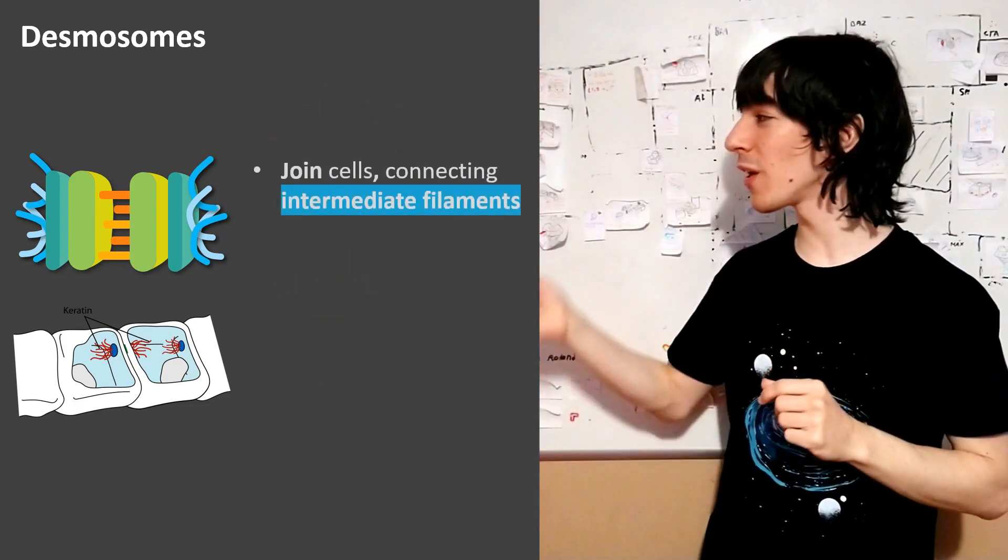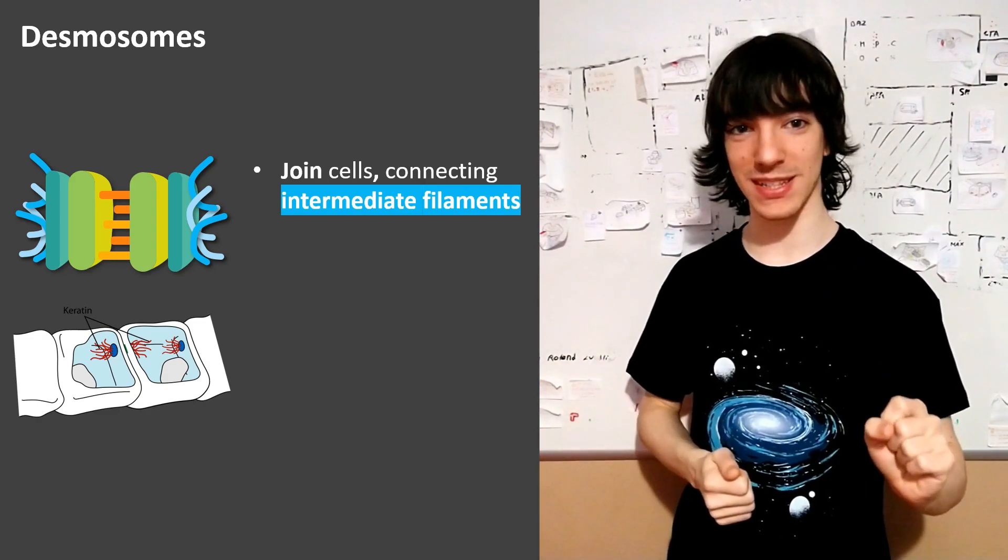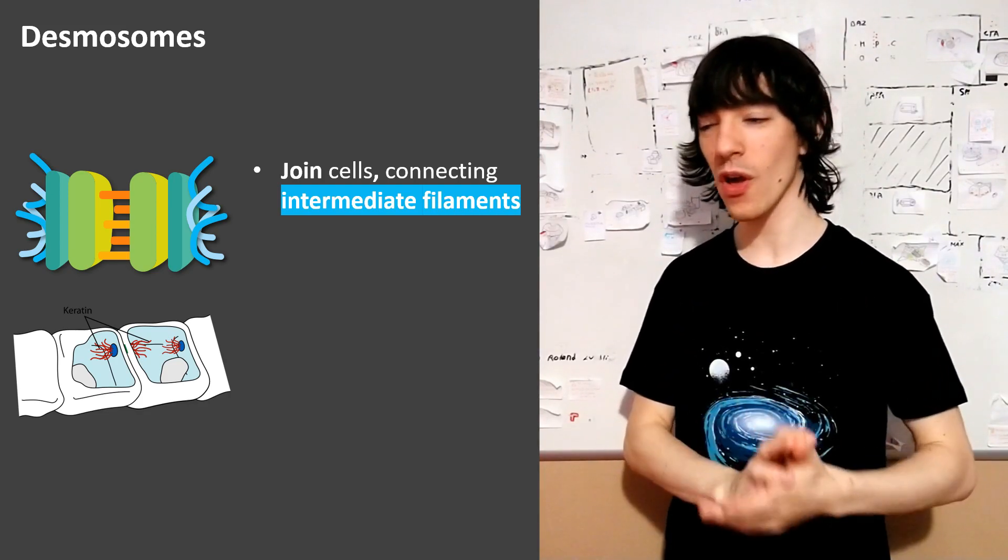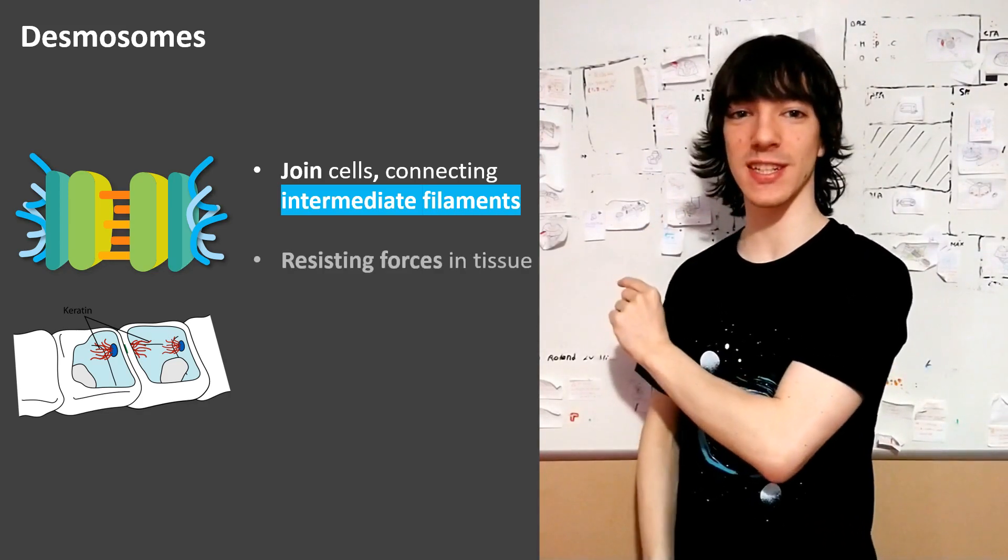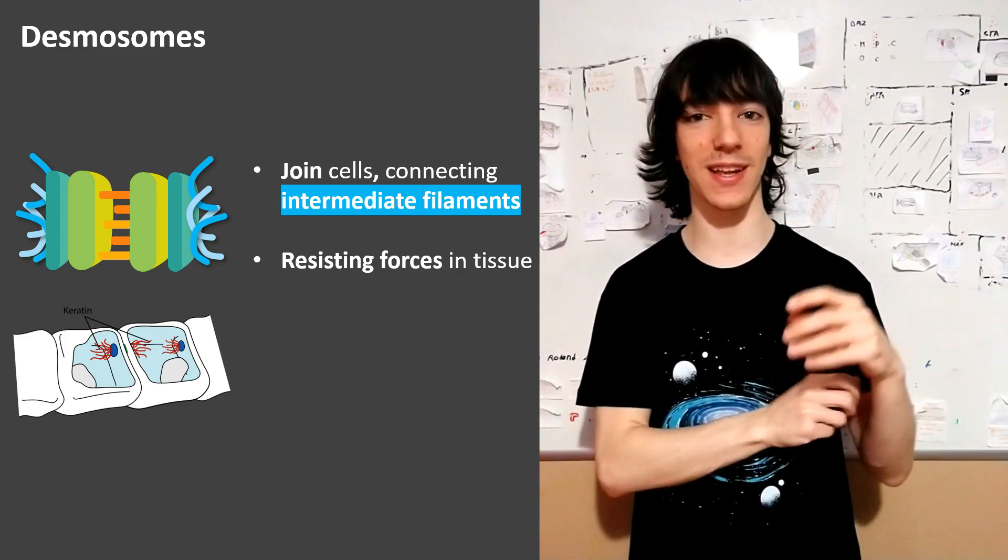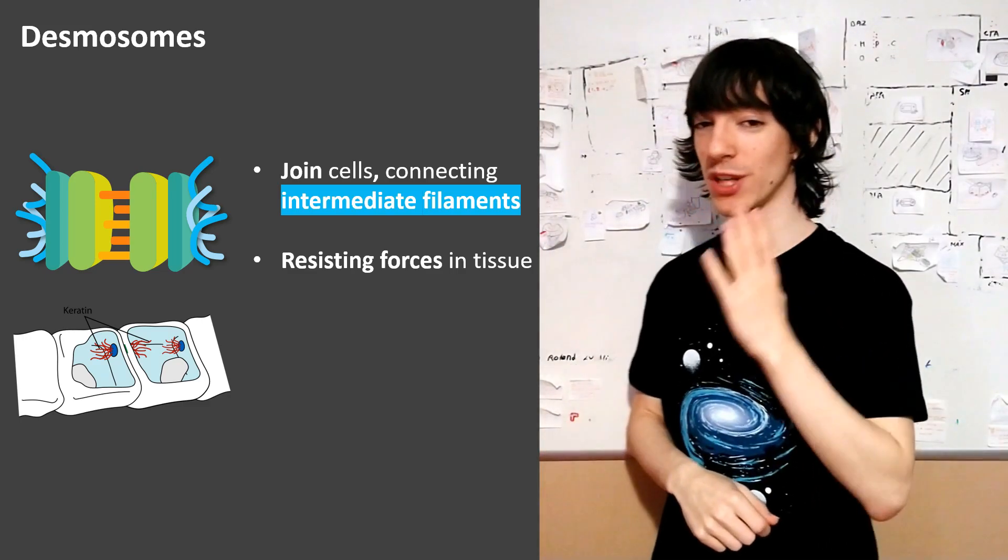And that's why not only do they connect cells to one another, they are also the best filaments and desmosomes are the best intercellular junction for resisting forces in the tissue. The reason why when you pull on your skin it doesn't fall off is because of desmosomes.